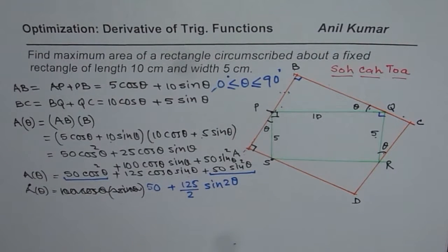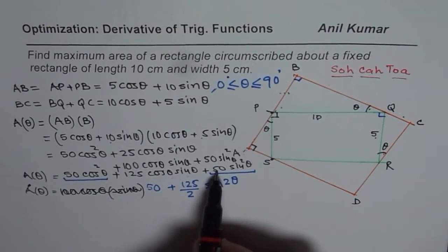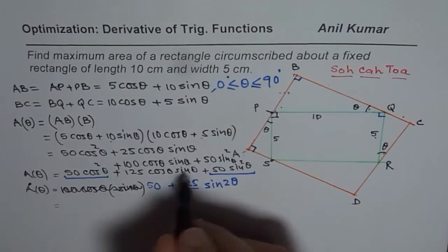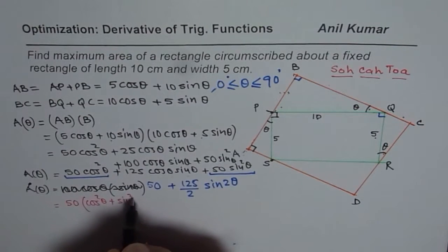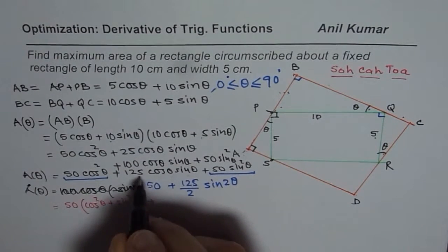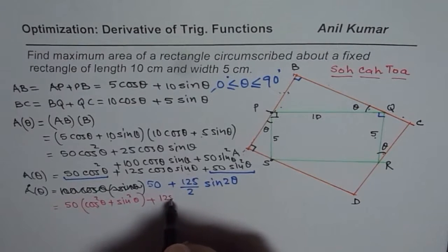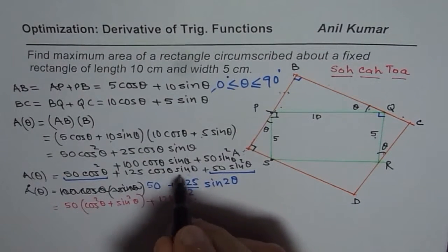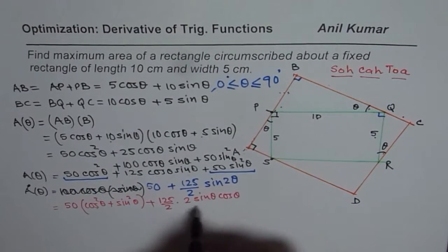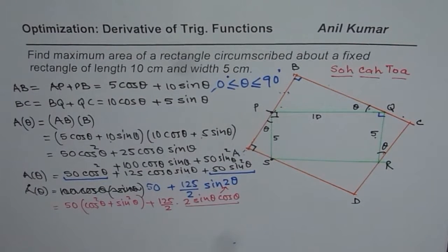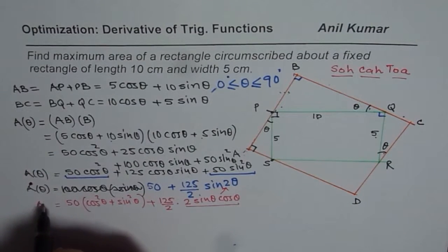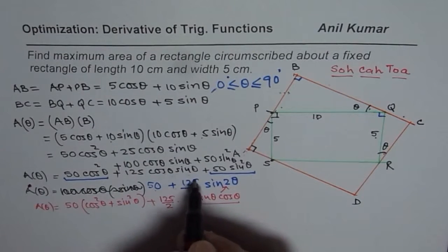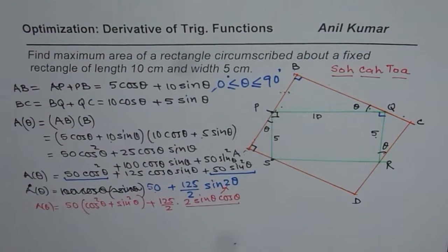Let me give some background. We take 50 common, giving us 50 times (cos squared theta plus sin squared theta) equals 50. For the middle term, we write 125 over 2 times 2 sin theta cos theta. Since 2 sin theta cos theta equals sin 2 theta, we get our simplified expression. So A(theta) equals 50 plus (125/2) sin 2 theta.